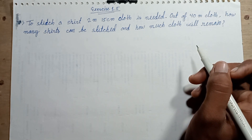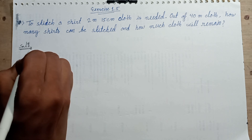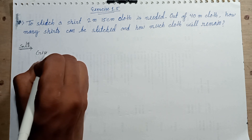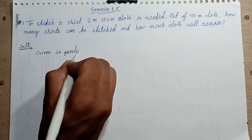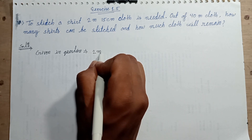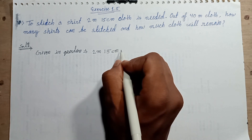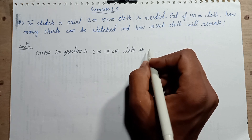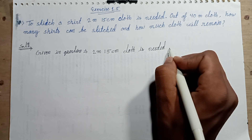Let's find the solution. Given in the question: 2 meters 15 centimeters of cloth is needed for one shirt.